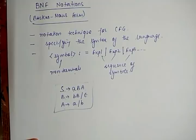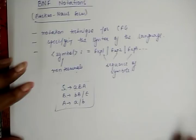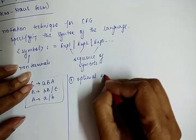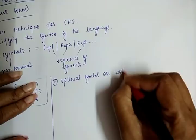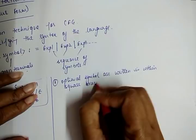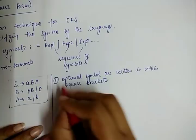BNF notation has some rules. First, the optional symbols are written within square brackets.